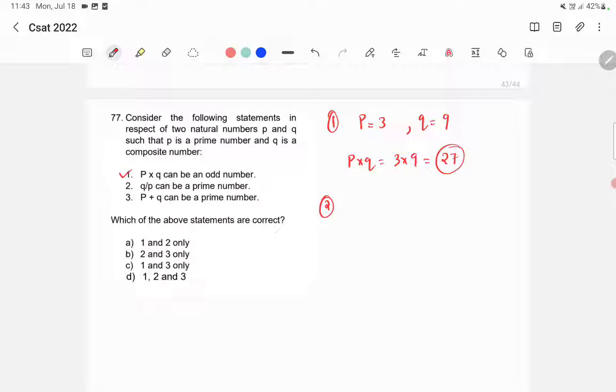Statement 2 states that Q by P can be a prime number. Again we will take P is equal to 3 and Q is equal to 9. Then Q by P is equal to 9 by 3, which is equal to 3. 3 is a prime number. So statement 2 is also correct.